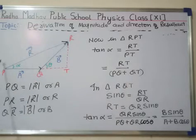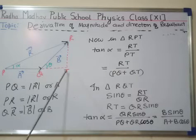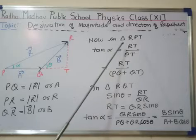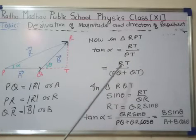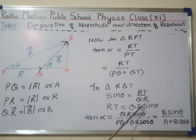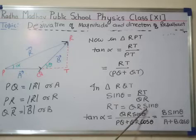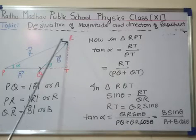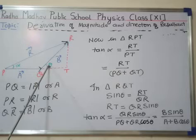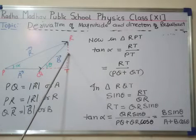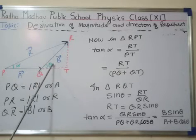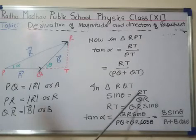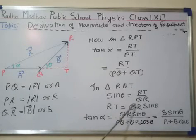Here PT is equal to PQ plus QT. So tan alpha becomes RT, which is QR sin theta. Why? Because in order to find RT in triangle RQT, sin theta is equal to perpendicular upon hypotenuse, or sin theta is equal to RT upon QR. When we cross multiply, RT becomes QR sin theta.